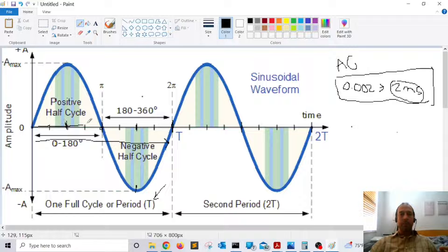So in this case, we have one, two, three, four, five, six, seven, eight. All right, so that will be eight times 0.002 seconds.